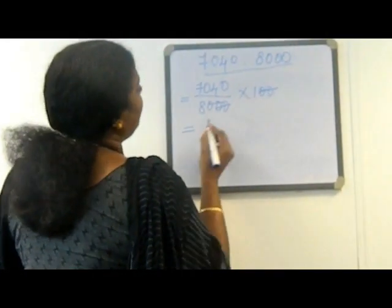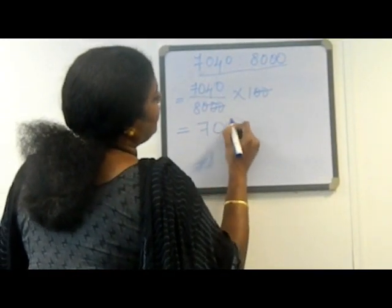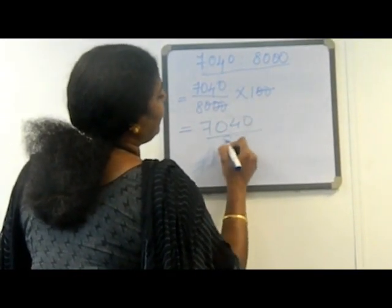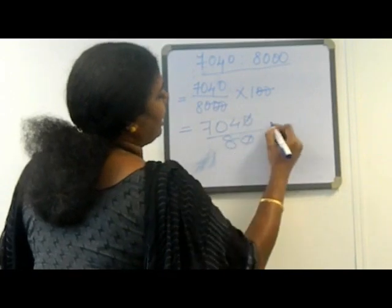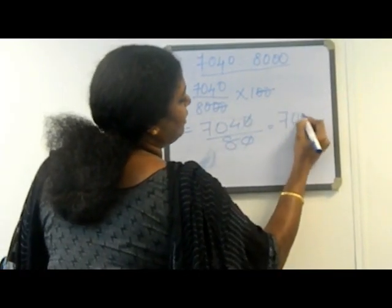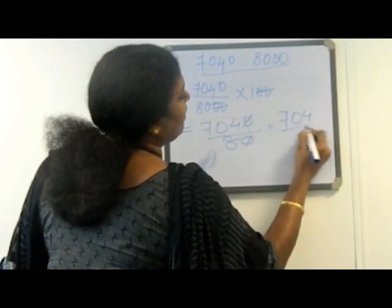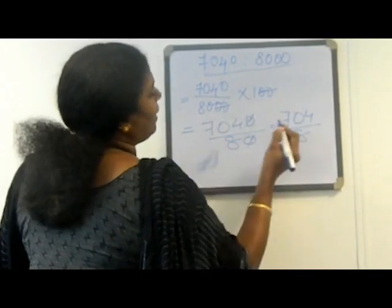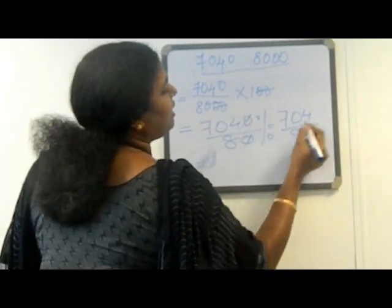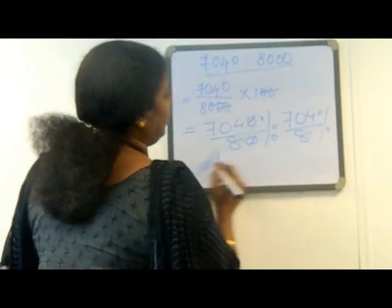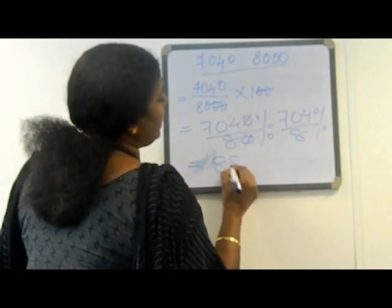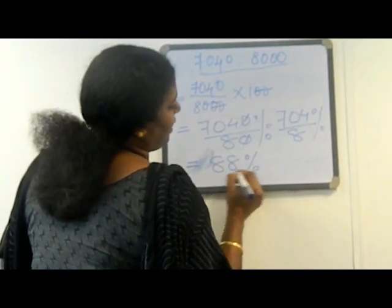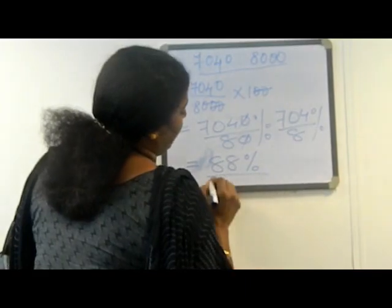Simplifying: 7040 divided by 80, which gives us 704 divided by 8. We always write the percentage sign. That means 88% is Ram's expenditure as a percentage of his monthly income.